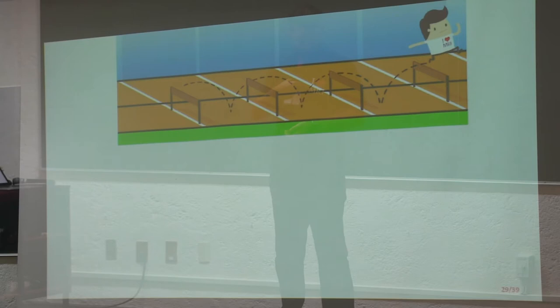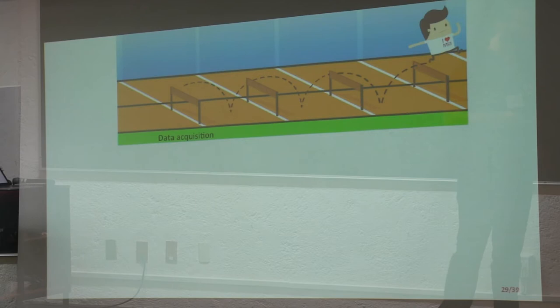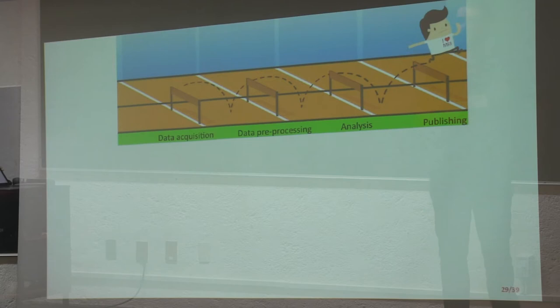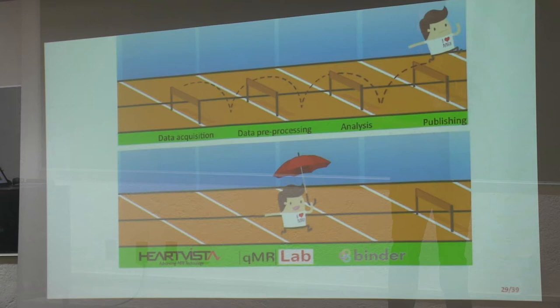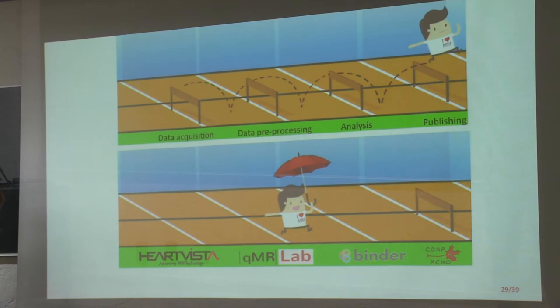The current way we do science: we acquire the data, pre-process the data, do the analysis, and finally publish — with lots of hurdles, each taking way longer than you ever think. Our vision is that this should be much more straightforward: a workflow from acquisition through pre-processing, analysis, sharing, and publishing. Consider it a sprint — or, in the way I do science, more of a stroll. I tend to take things very slowly.